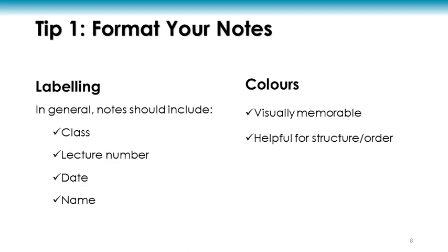Some people are more visual than others, so you may want to use colors to highlight different things in your notes. Using different colors can help you to create sections in your notes. For example, you might use blue to represent headings and the color red for different examples.